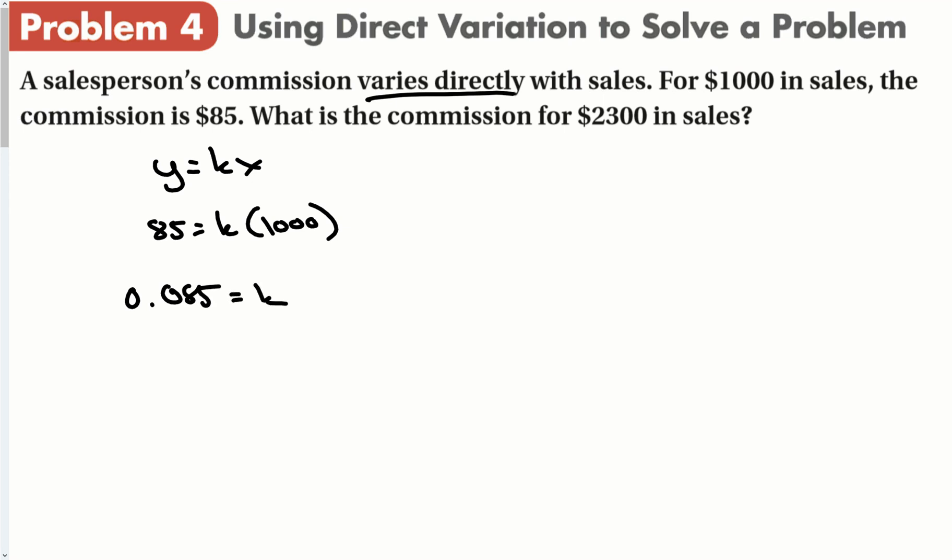So you make $85 on $1,000, you're going to make more on $2,300. Let's find out. So y is going to equal my constant, 0.085 times $2,300. And we get $195.50.